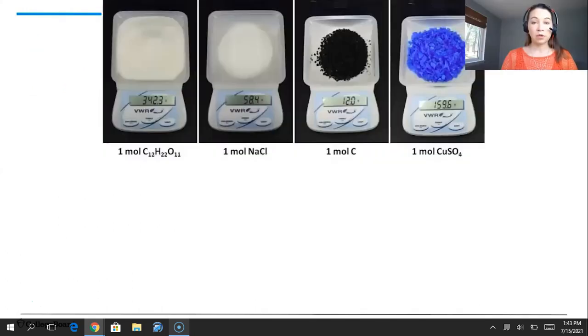So let's take a look at some examples. A mole of sucrose or C12H22O11 has a mass of 342.3 grams. A mole of sodium chloride has a mass of 58.4 grams.